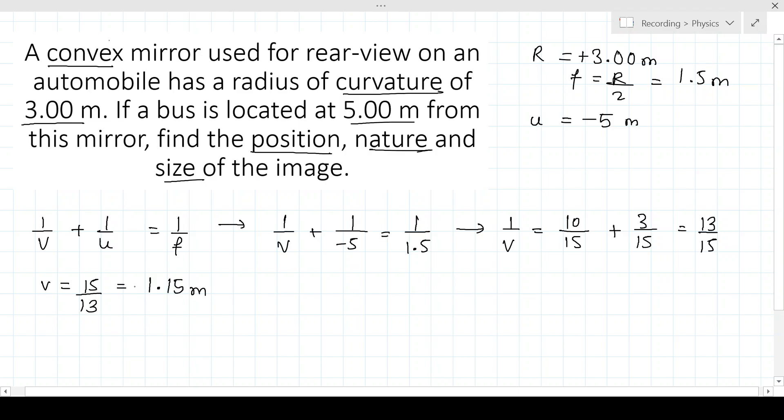So that gives us v equals 15 by 13, that is 1.15 meters. So here it is positive 1.15 meters, that's why it is behind the mirror. The image is found 1.15 meters behind the mirror.